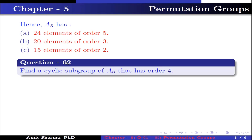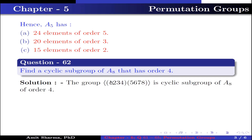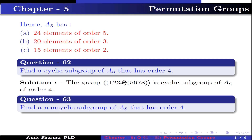Question number 62: find a cyclic subgroup of A8 that has order 4. The group generated by the permutation (1 2 3 4 5 6 7 8) is a cyclic subgroup of A8 of order 4. This is isomorphic to K4.